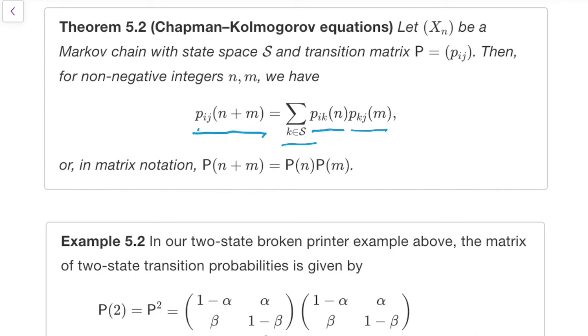Again, we see we have an expression which is for how you multiply two matrices together. And so what we've got there is pn plus m on the left, and pn times pm on the right.